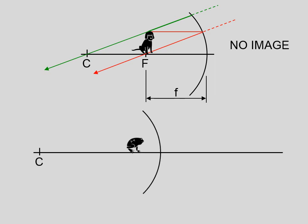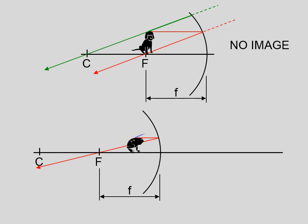Let's take the last basic case, and that is with a concave mirror where the object is between the focal point and the mirror. Rule number one says: go in parallel to the principal axis, bounce out along a line through the focal point. Rule number two says: line up the top of your object with the focal point and head towards the mirror. When you hit the mirror, you reflect back parallel to the principal axis.